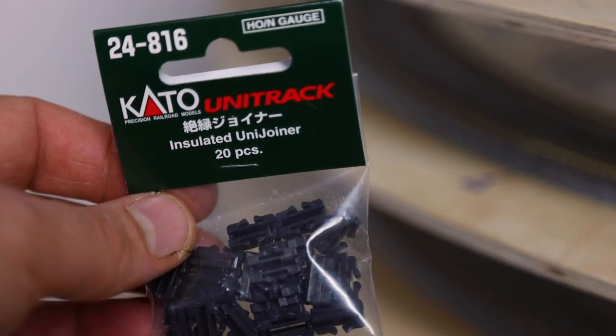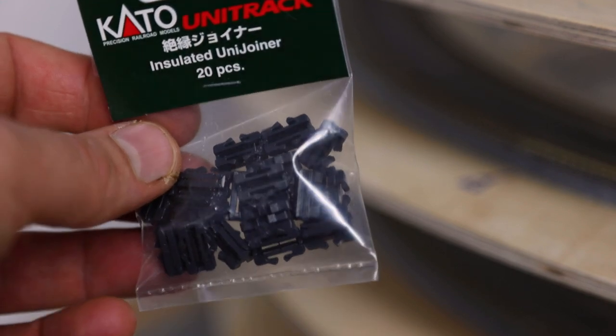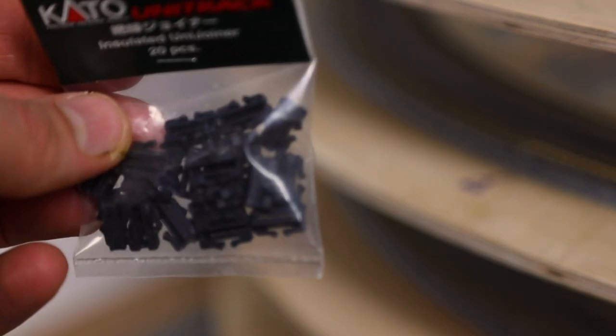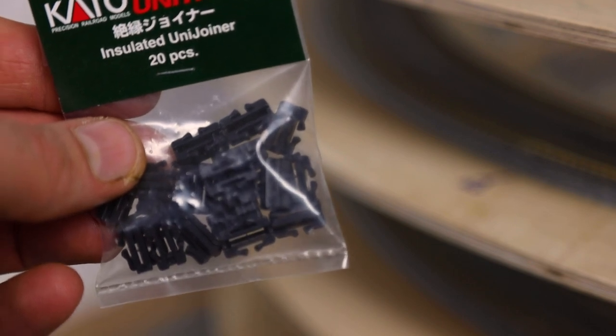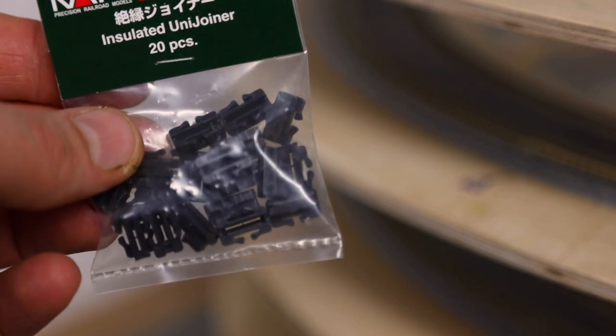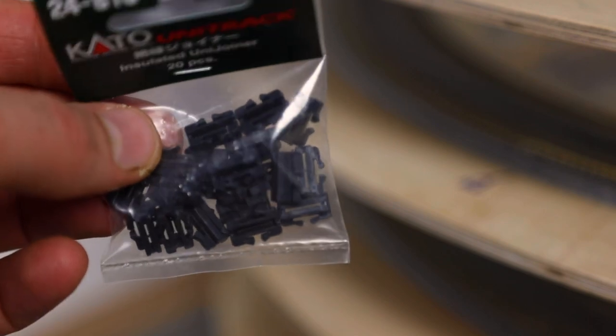These are the insulating joiners, the insulating uni joiners that Kato makes. I'll be replacing the existing uni joiners at each block boundary with these insulating joiners.